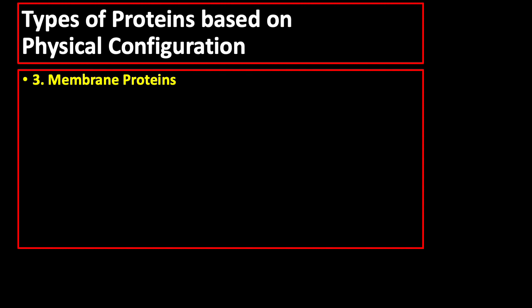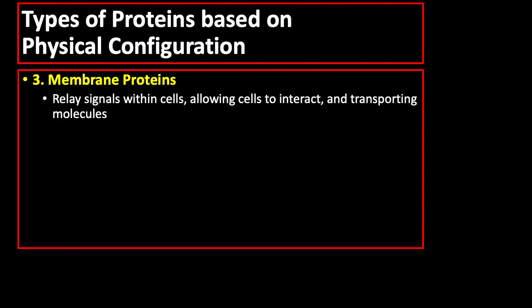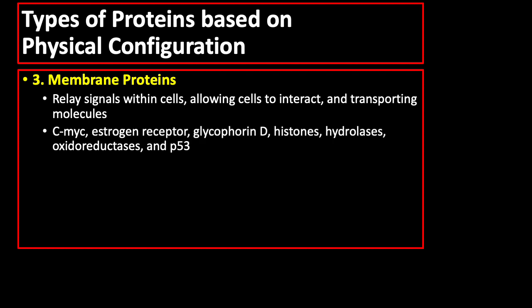The third type is membrane protein, which functions in relaying signals within cells, allowing cells to interact, and transporting molecules. Examples of membrane proteins are CMYC, estrogen receptor, glycophorin B, histones, hydrolases, oxidoreductases, and P53.